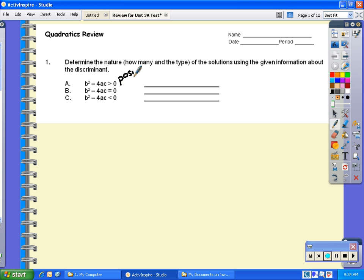If my discriminant b² - 4ac is equal to zero, then I know that I'm going to have one real solution.